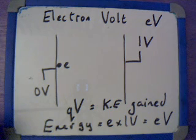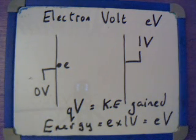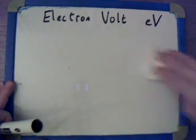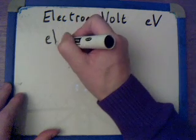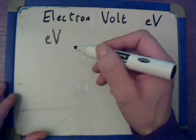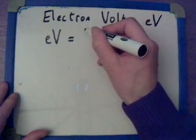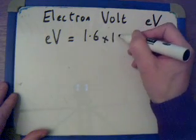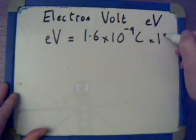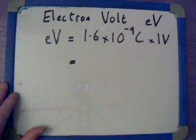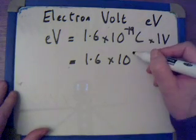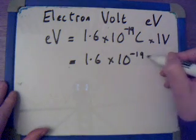That energy would, of course, be in joules. Let us look at that in more detail. We have the energy of EV — let's put that in joules. The charge on an electron, which is the same as the charge on a proton, known as the elementary charge in some data booklets, is equal to 1.6 times 10 to the minus 19 coulombs, multiplied by one volt because we have one volt potential drop. That gives us an energy of 1.6 times 10 to the minus 19 joules.